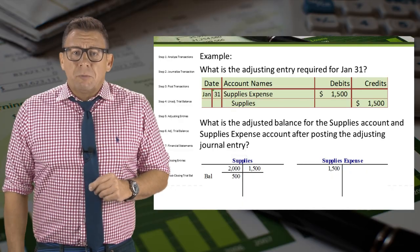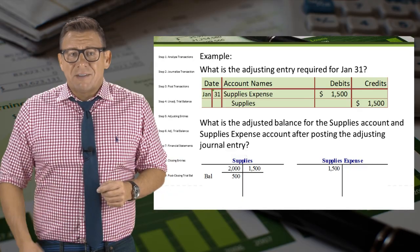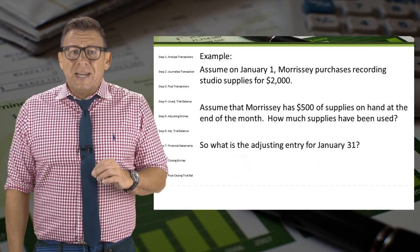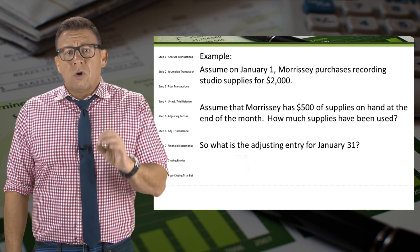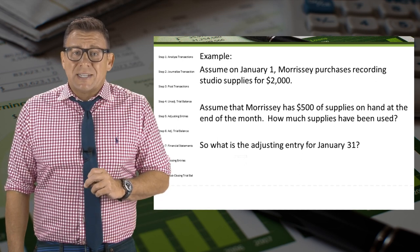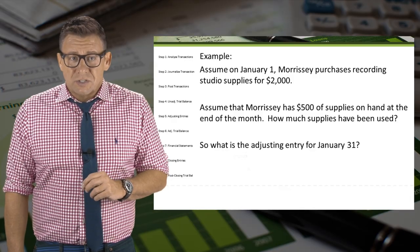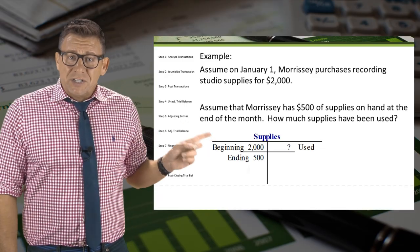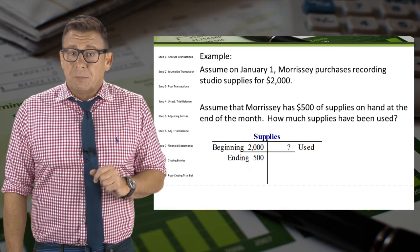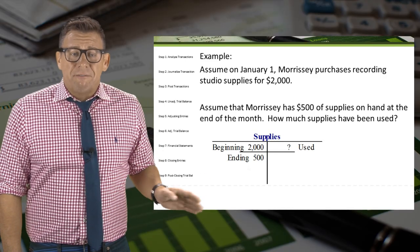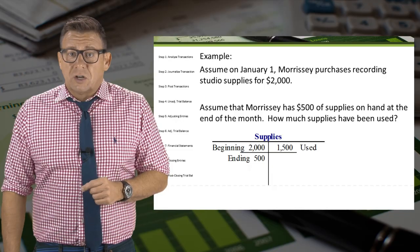Sometimes we might face a question where the amount of supplies used is not given to us. For example, the question might be phrased this way: assume that Morrissey has $500 of supplies on hand at the end of the month. How much supplies have been used? Using our T-account, we can see that we had $2,000 of supplies available at the beginning of the month, and now we only have $500 remaining.